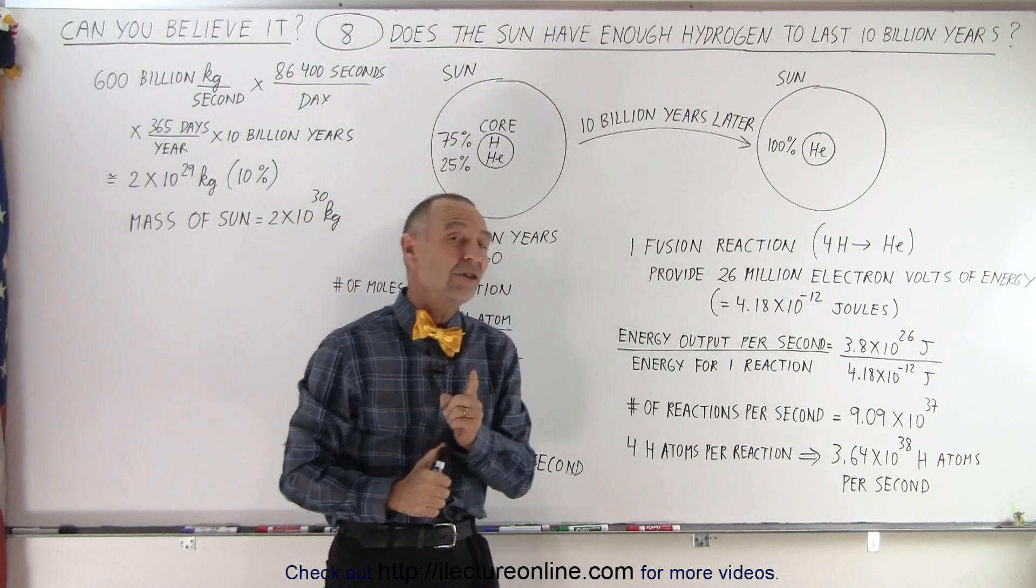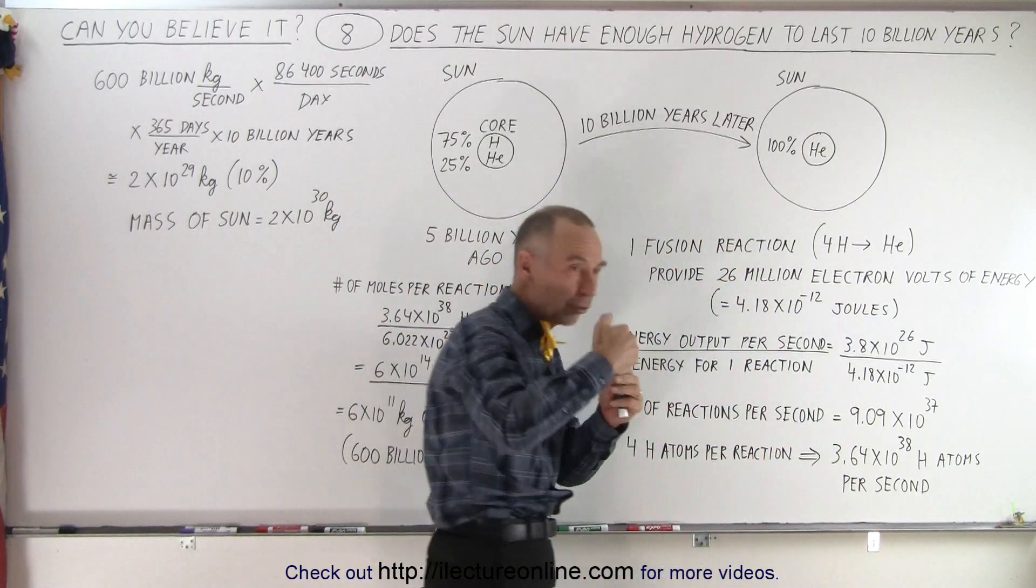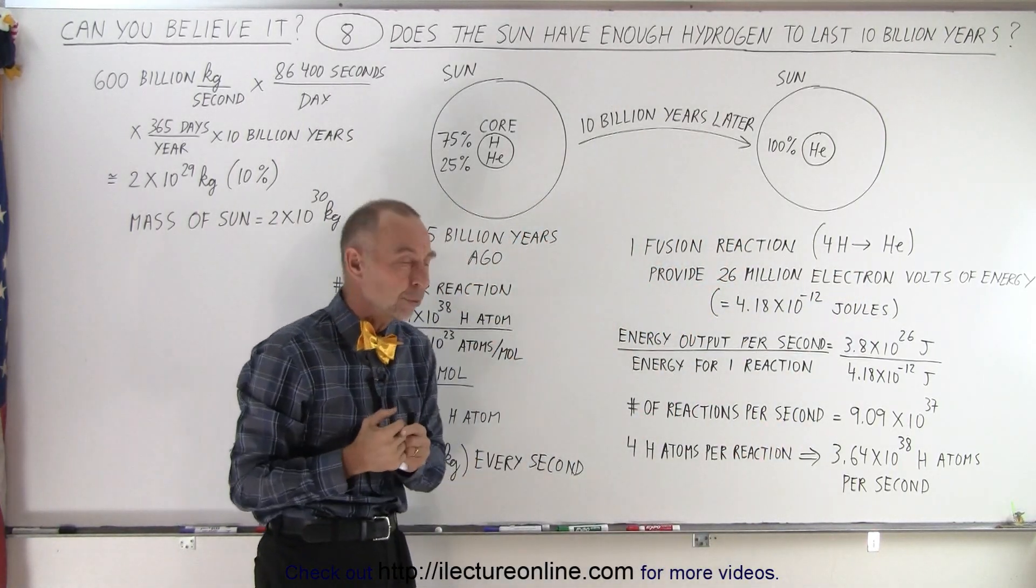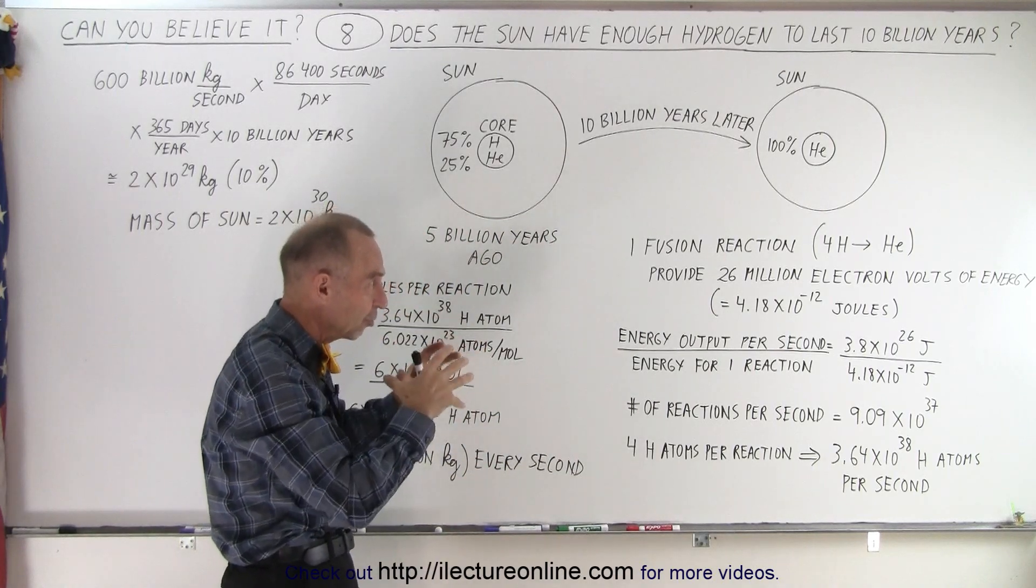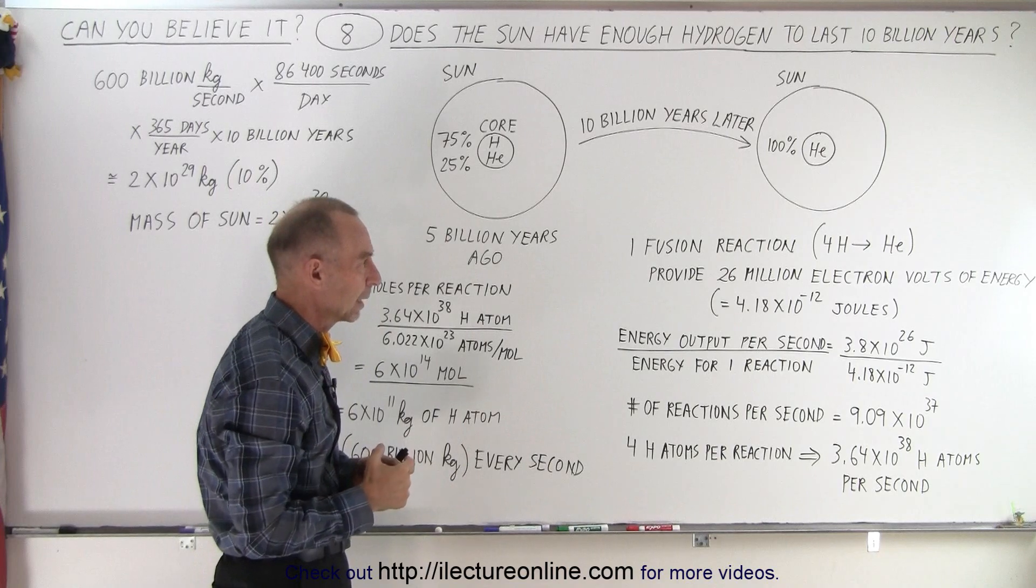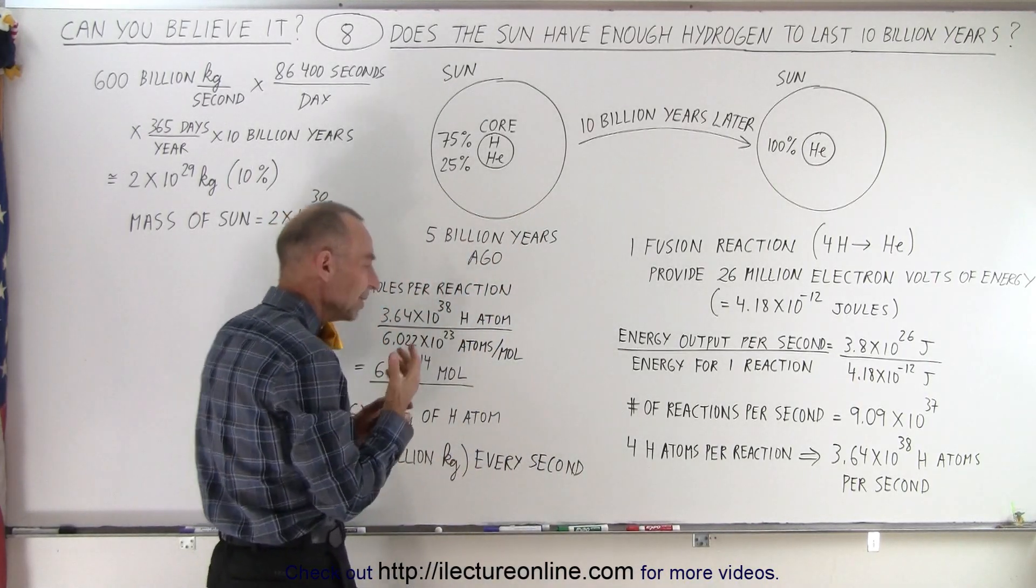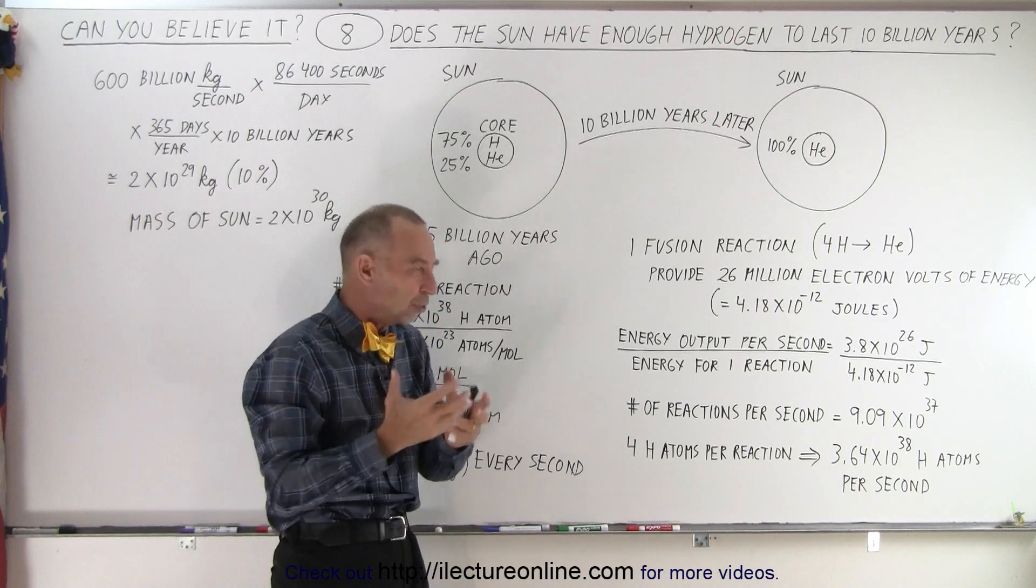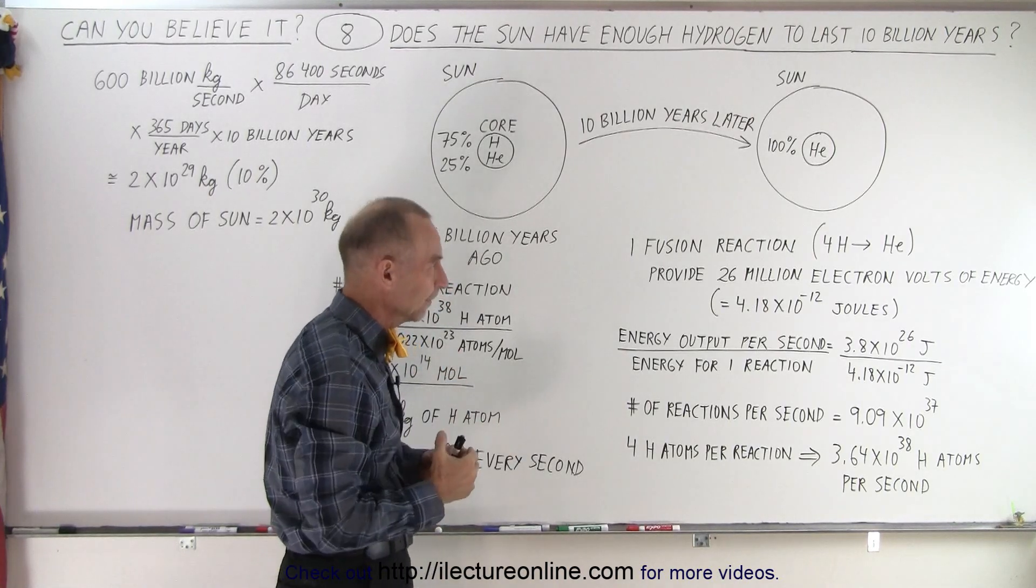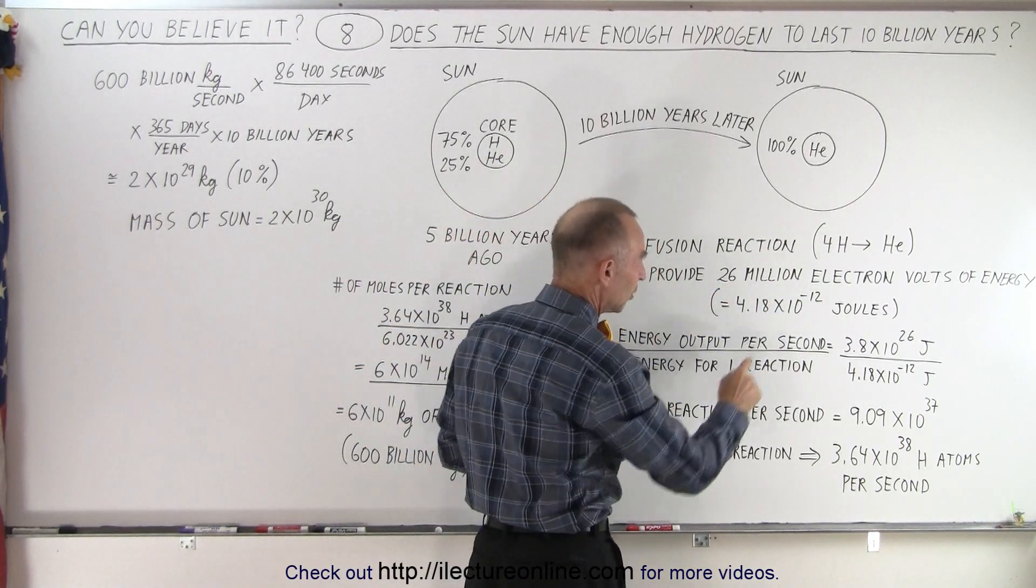So, the fusion reaction in the Sun is the conversion of four hydrogens into helium. It goes through several steps, it's called the proton-proton chain, and eventually four hydrogens are converted to helium, and it does that at a furious rate. Because, the Sun provides 3.8 times 10 to the 26 joules of energy every single second. Now, one of these reactions provides 26 million electron volts of energy,